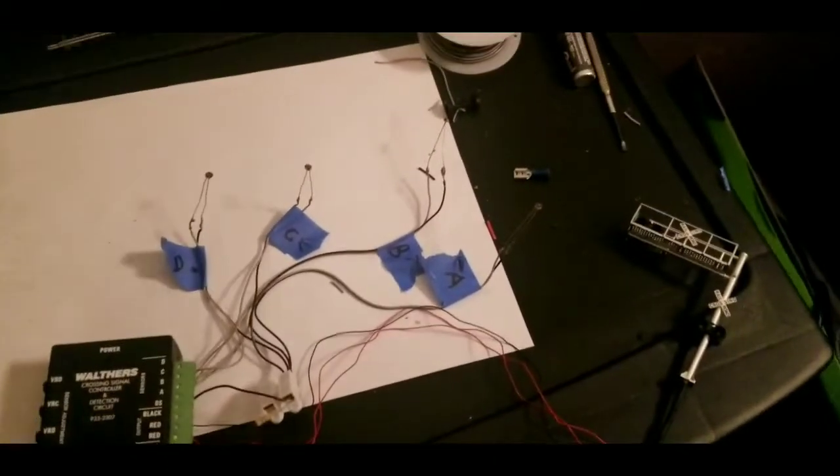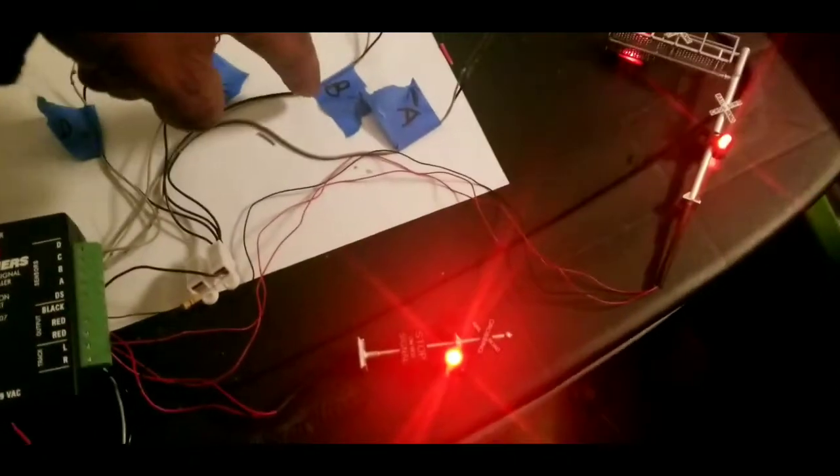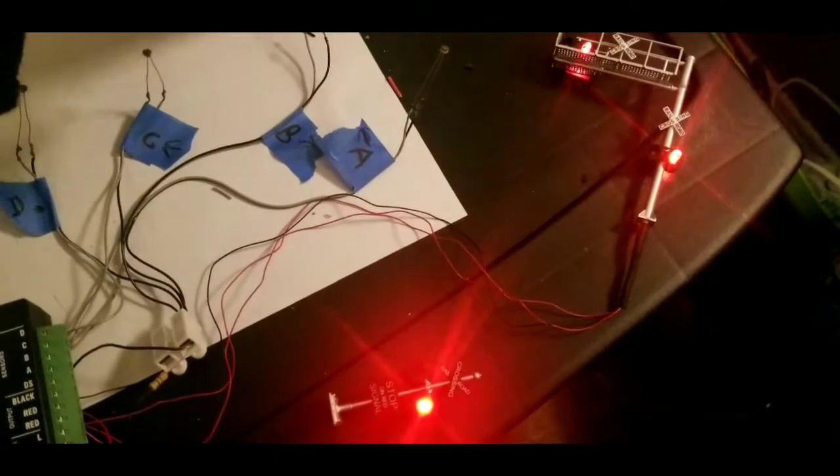So once again, how this works is you have D, they come on, C, actually B over here turns it off when the track, when the car goes over it.